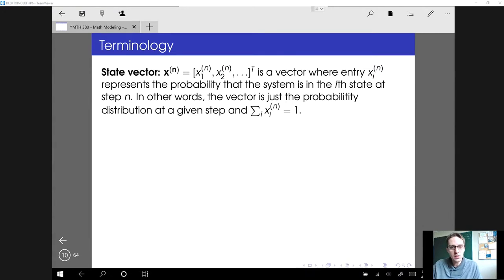And in order to describe how a system evolves, we need a couple of things. We first of all need to know the state vector. And it's a vector where each component represents the probability that the system is in the i-th state at step n. And in other words, this is a vector where the entries have to sum to one, since when you specify the state of the system, well, you have to be in one of the n states. So the sum of all of the components, again, must be one. All right, so we need a state vector. And typically, we'll use a column vector for this.